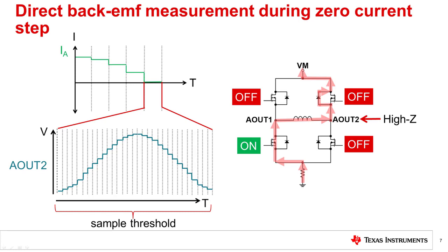However, the sampled back EMF should decrease to zero when the motor stalls. Since the back EMF is only monitored during the zero current step, this method will not work when the stepper motor is running in full step mode. The reason is because in full step mode, the coil current switches between positive and negative maximum current set by the user and does not approach a zero current step. Therefore, the back EMF measurement cannot be made.